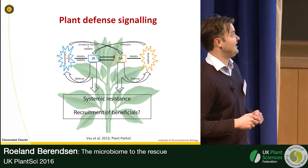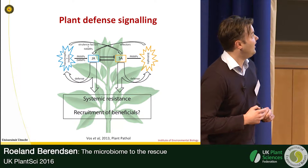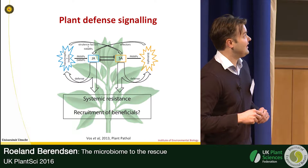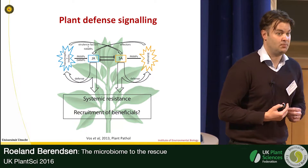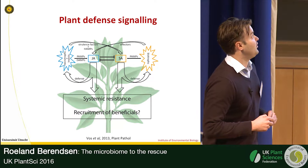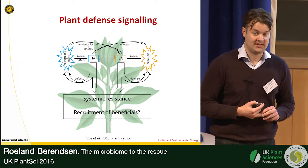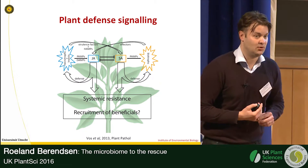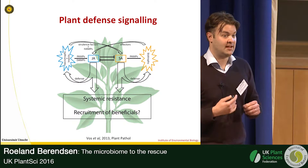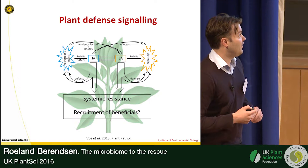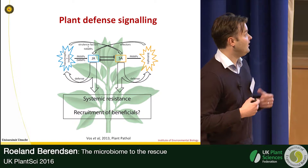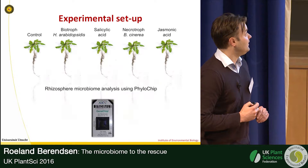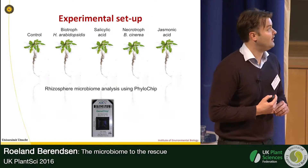This is what we set out to test. We know that all plants have a very intricate immune system that revolves around the main defense hormones salicylic acid and jasmonic acid. These hormones are produced when plants are infected — salicylic acid mostly in response to biotrophic pathogens, whereas jasmonic acid is produced in response to necrotrophic pathogens and insects.